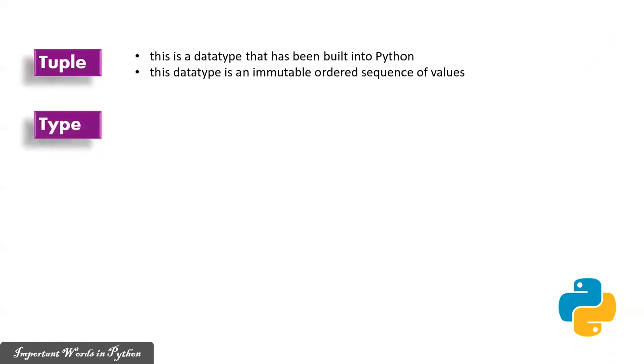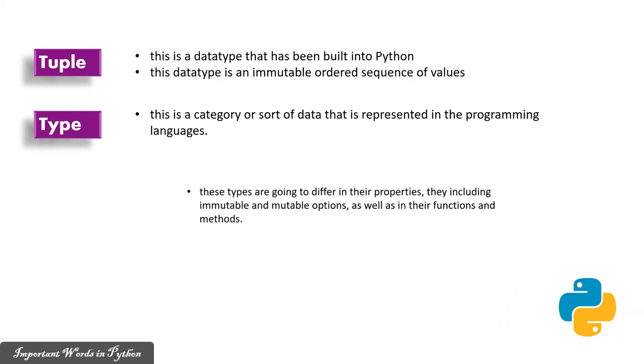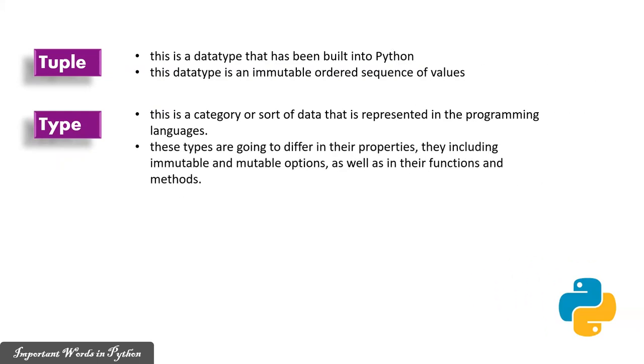Tuple: This is a data type that has been built into Python. This data type is an immutable ordered sequence of values. Type: This is a category or sort of data that is represented in the programming languages. These types are going to differ in their properties, including immutable and mutable options, as well as in their functions and methods.